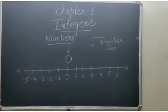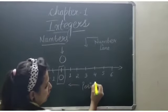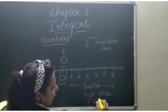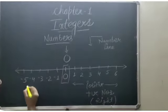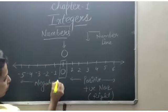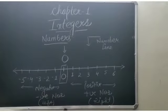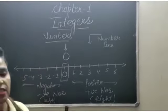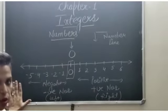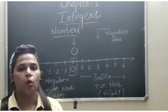A number line basically consists of 0, and this is your positive numbers, which is on the right side, and this is your negative numbers. So, the summary of all this is: integers is a collection of 0, plus positive numbers, plus negative numbers. In other words, we can say the collection of whole numbers plus negative numbers is called integers.